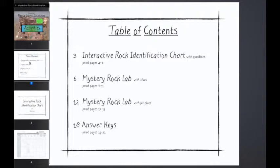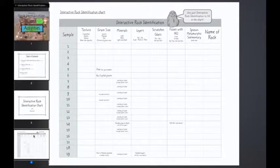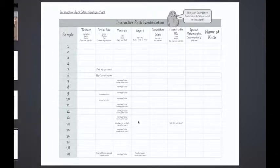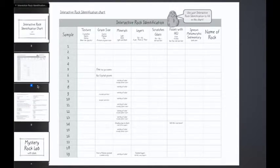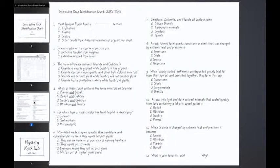The interactive rock identification chart is the main activity that goes with the interactive rock identification. Students put down all of their information on this chart as they follow through the 19 samples. The questions that follow focus on the key concepts of rock identification.